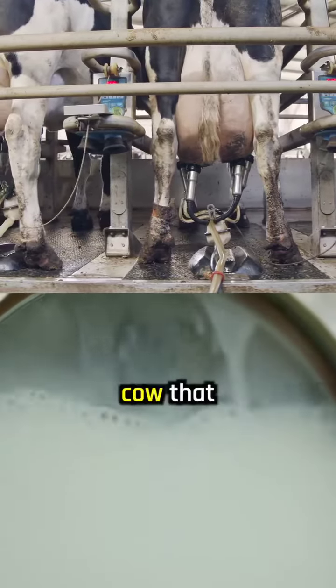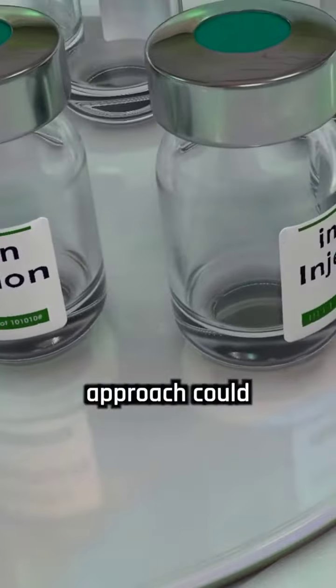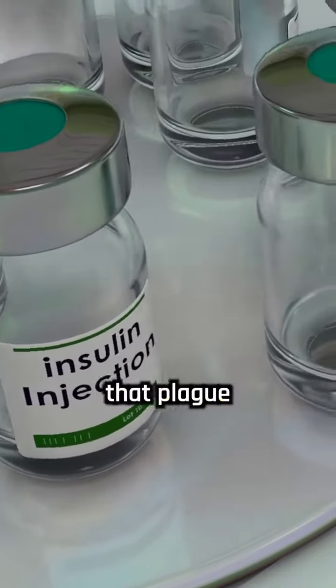Scientists genetically engineered a cow that can produce human insulin directly in its milk. This innovative approach could solve insulin shortages and high prices that plague many countries.